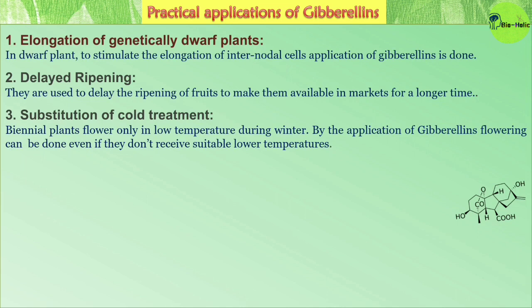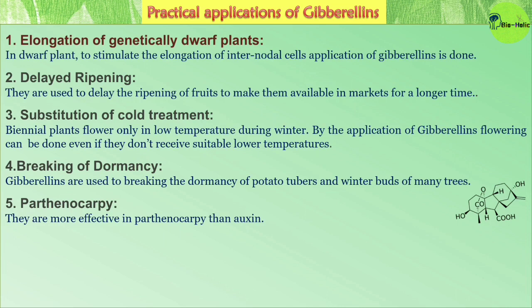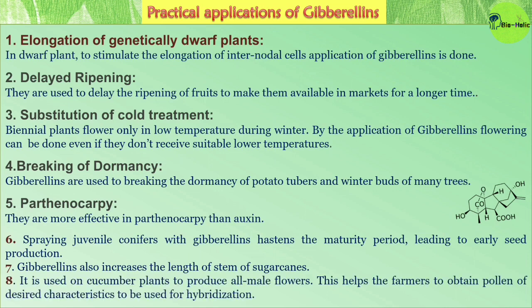Fourth is breaking of dormancy — gibberellins are used to break the dormancy of potato tubers and winter buds of many trees. Fifth, gibberellins are more effective in parthenocarpy than auxins — in fact, gibberellins are said to be 500 times more effective in parthenocarpy than auxins. Additionally, spraying juvenile conifers with gibberellins hastens maturity leading to higher seed production. Gibberellins also increase the stem length of sugar cane and are used on cucumber plants to produce all-male flowers, helping farmers obtain pollen of desired characteristics for hybridization.